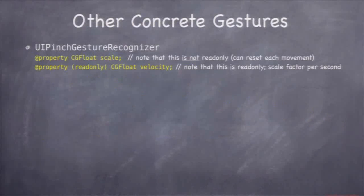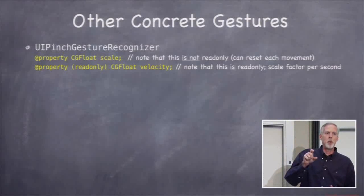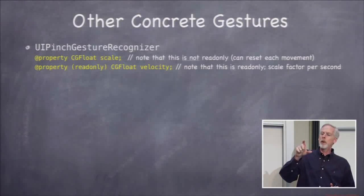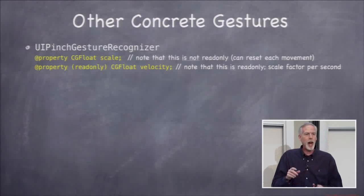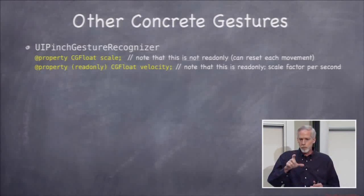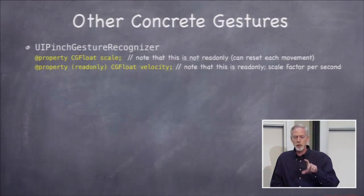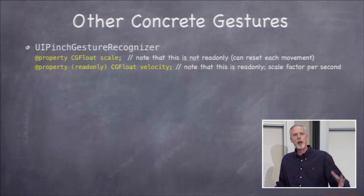Let's look at some other concrete recognizers. Pinch doesn't have translation — it has scale. When the pinch first starts, scale is 1.0. As you spread out it goes 1.1, 1.2, 1.5, 2.0; as you pinch in it goes back down, 0.8, 0.7, 0.6. Velocity is how fast the scale factor is changing per second. If the user is pinching out really quickly and repeatedly, maybe they're trying to zoom out fast, so you could zoom faster than usual.